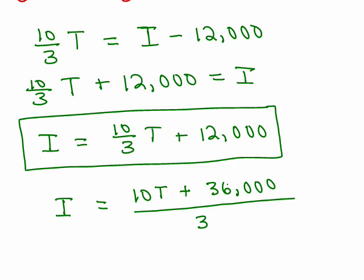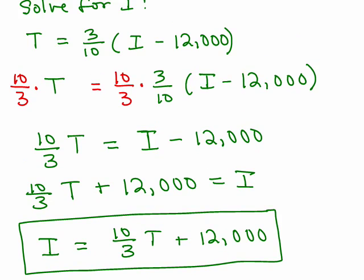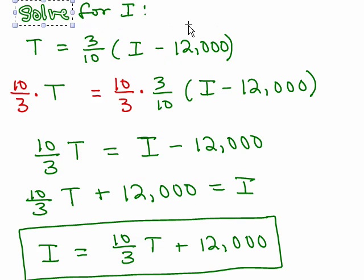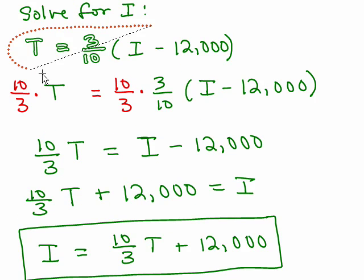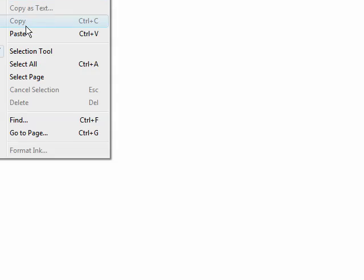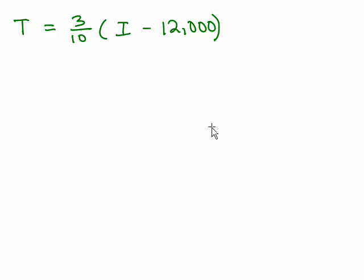So these are both correct. Now, let's look at the original again and let's do it by doing the distributive property first. So I'm going to take the same problem and we're going to try it a different way. Same problem but I'm going to do the distributive property first and see what happens.